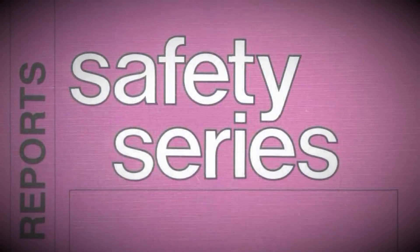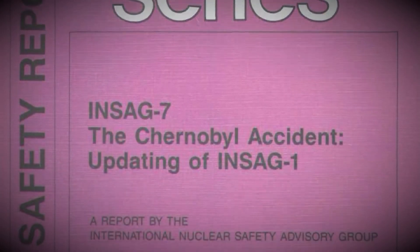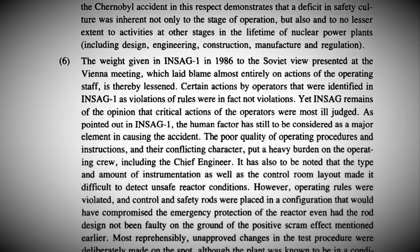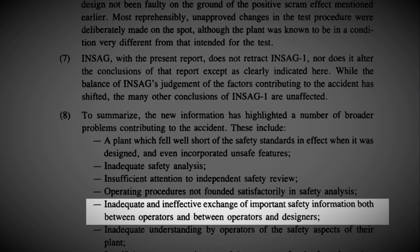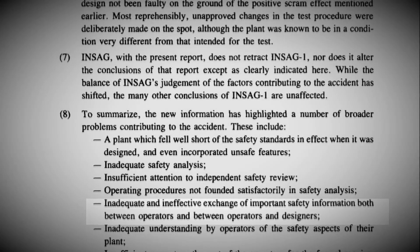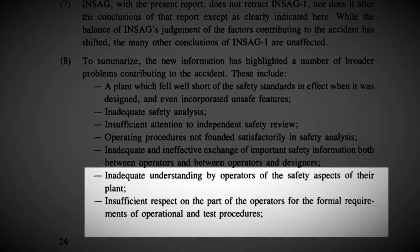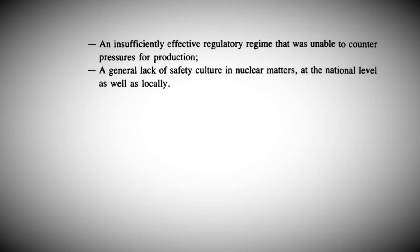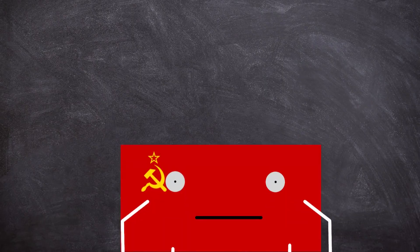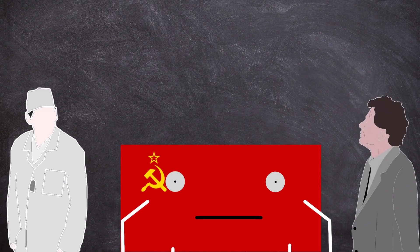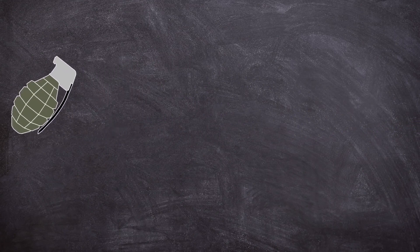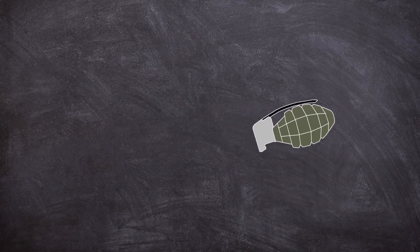This was all highlighted in the 1992 INSAG-7 report, which also said in its summary: 'The plant fell well short of the safety standards in effect when it was designed and even incorporated unsafe features, compounded by inadequate and ineffective exchange of information between both operators and between operators and designers. There was an inadequate understanding by operators of the safety aspects of their plant, also affected by insufficient respect on the part of the operators for the formal requirements of operational and test procedures.' The industry in the USSR had an insufficiently effective regulatory regime in place to counter pressures for production. The pressures from central government and lack of awareness of the design risks of the reactor meant that management acted dangerously in the false pretense that the RBMK was indestructible. Pretty much the entire management structure was throwing around a grenade that they didn't know had the pin pulled out of. Meaning disaster was only a matter of time.